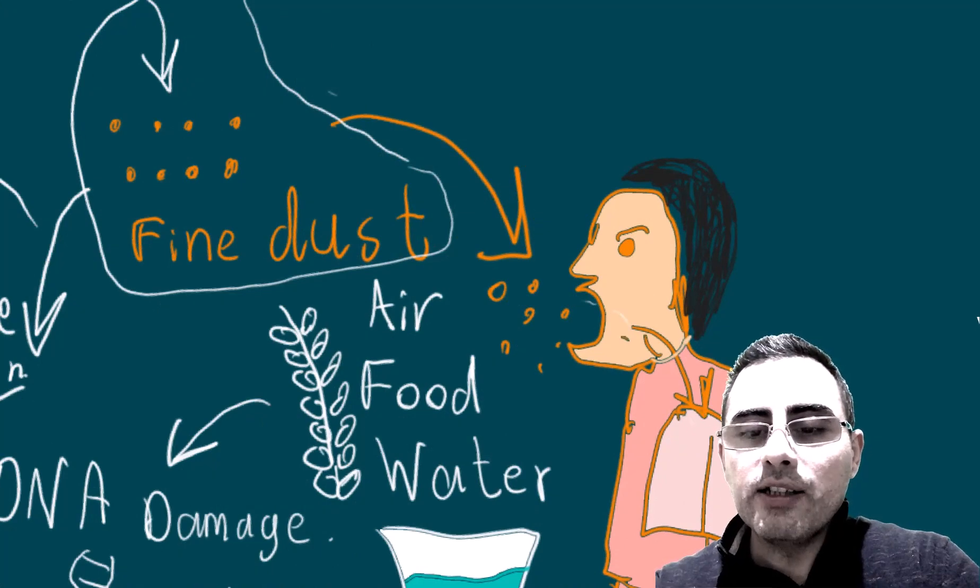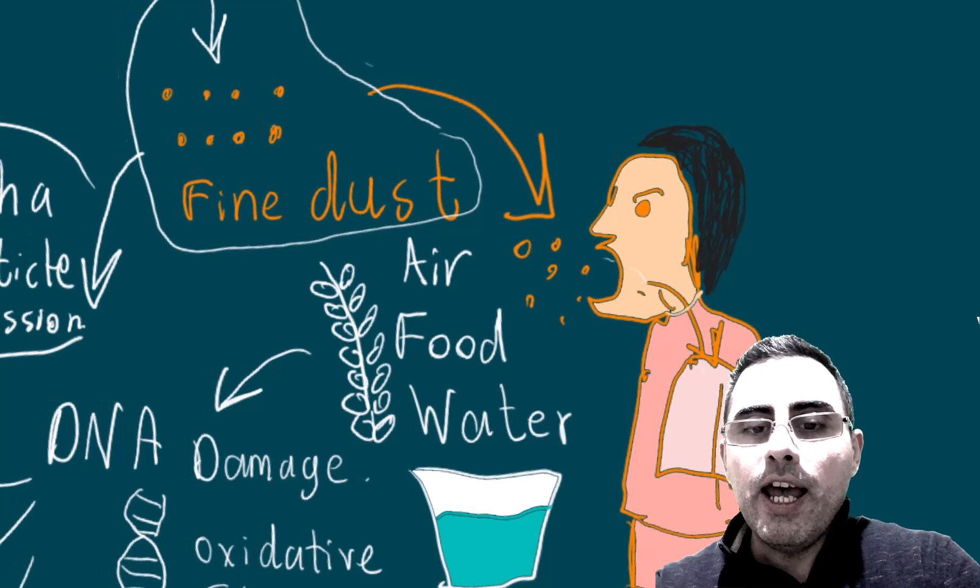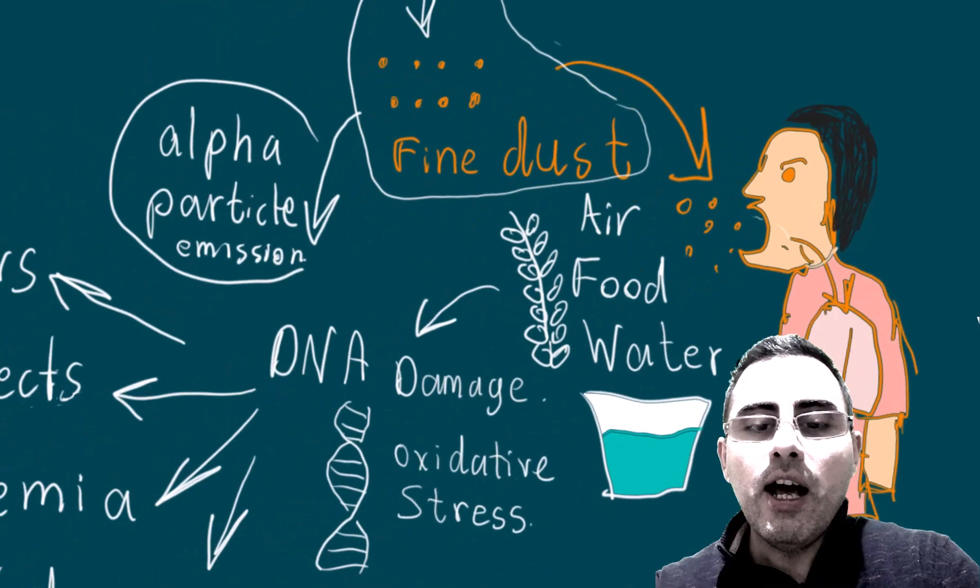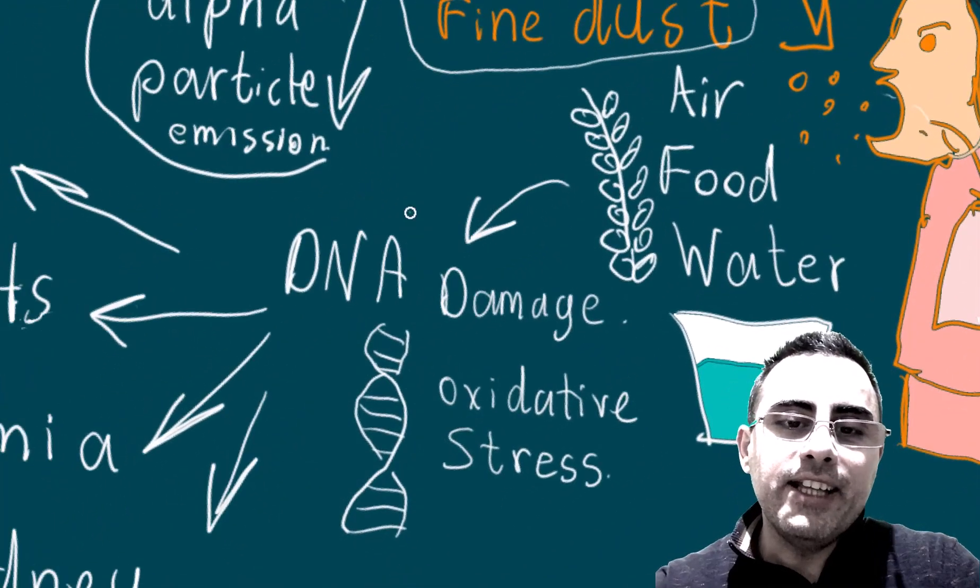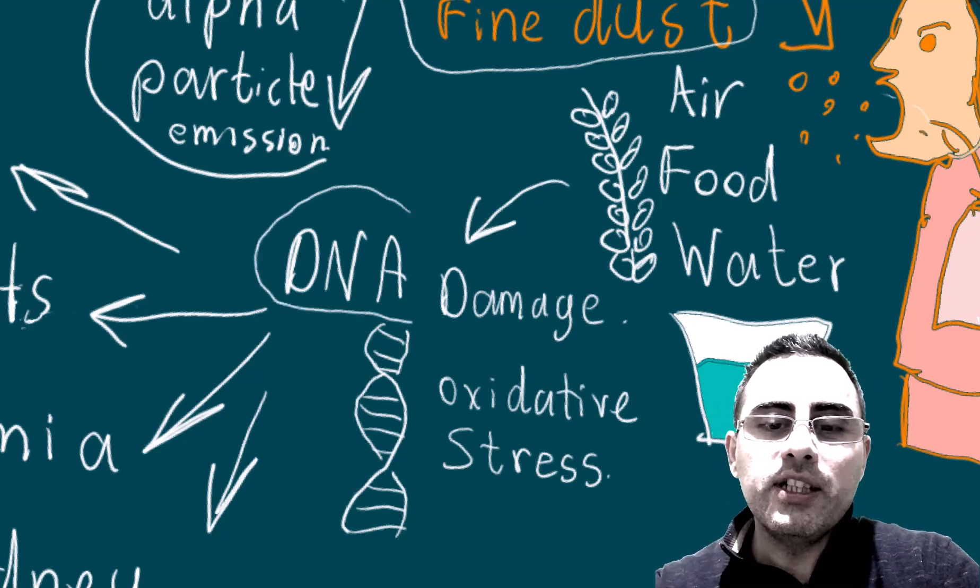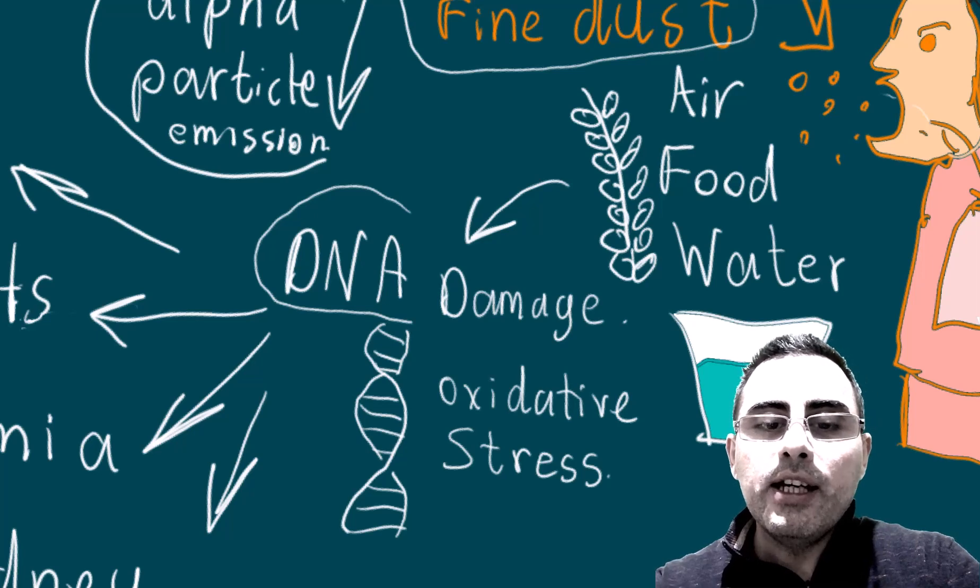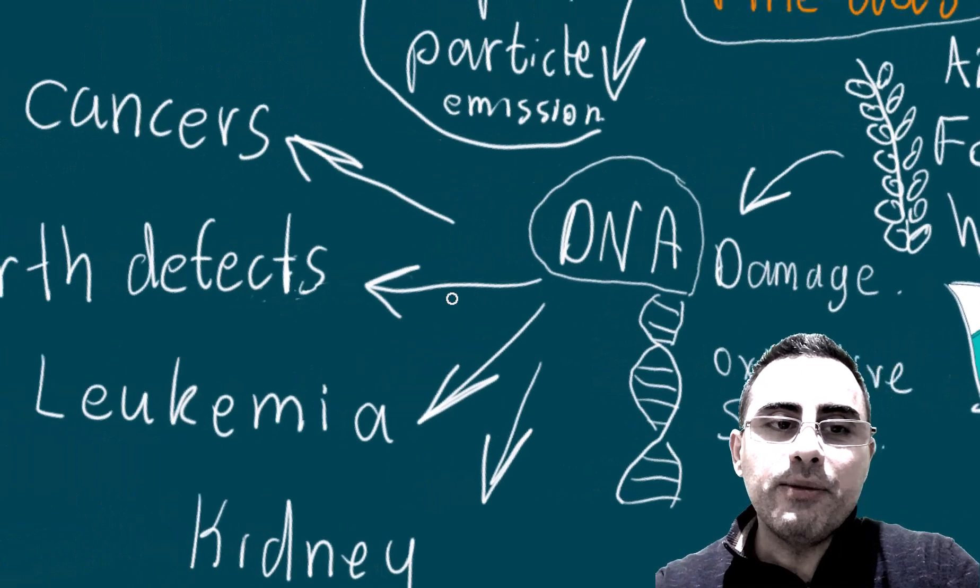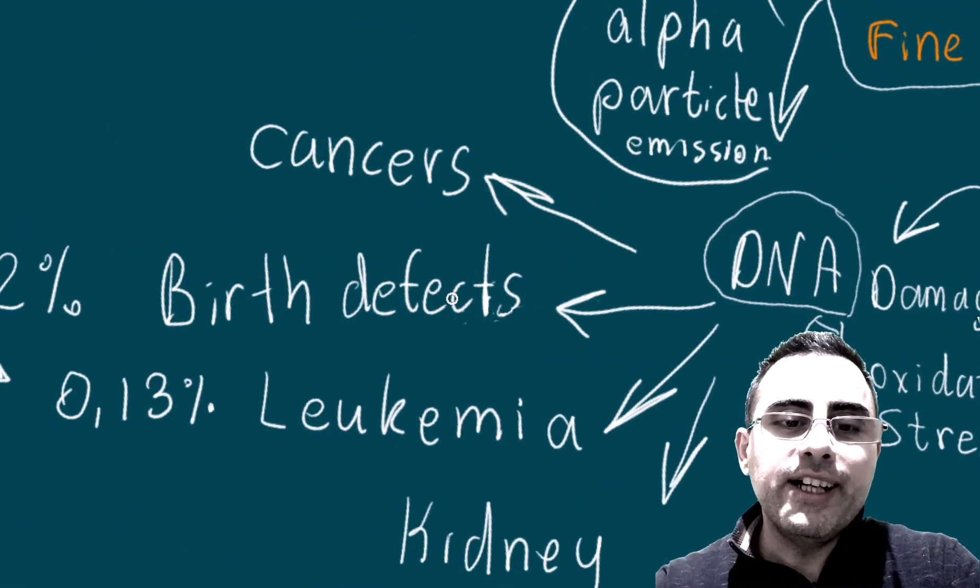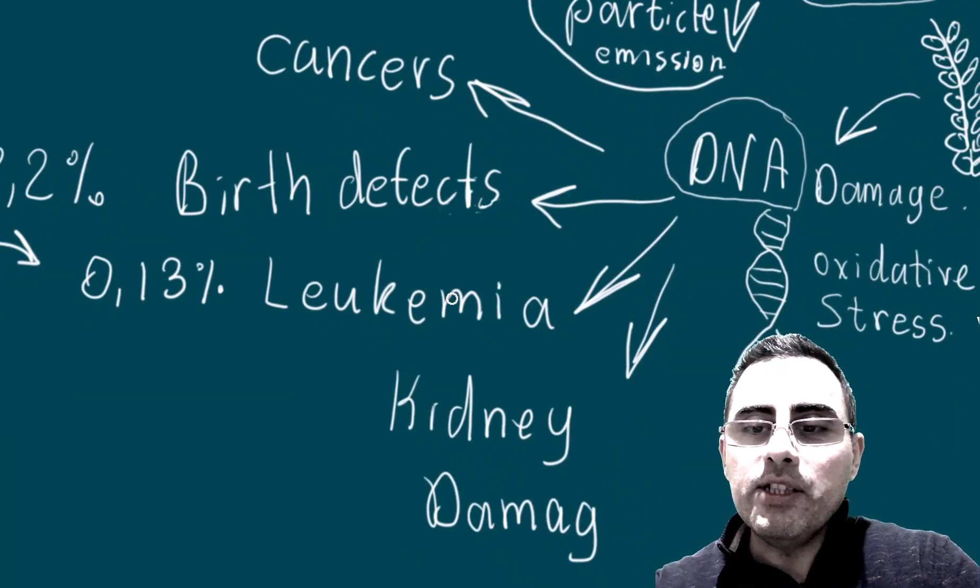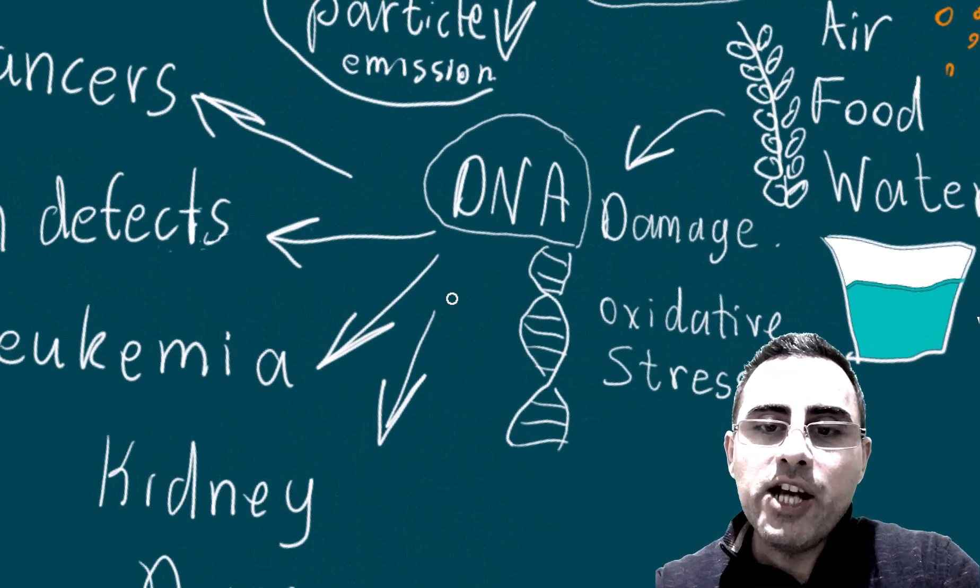When we inhale these fine particles, they deposit in lungs, in kidneys, and in bones, and they still have radiation. They have alpha radiation. Alpha radiation damages DNA, and fine particles in our body cause inflammation and mutation of DNA.